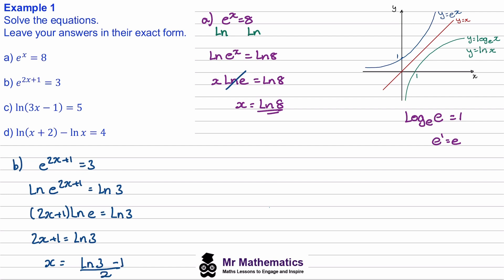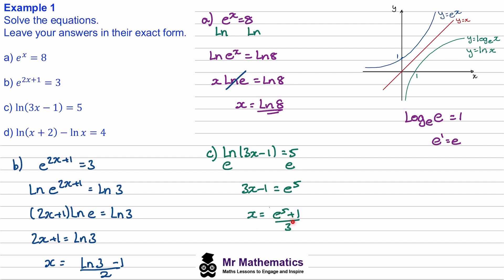Let's try question C. In this example, we need to cancel out this natural log. So now we'll raise e to the power of both sides. The e to the natural log will cancel, because we know it makes 1. This leaves us with 3x minus 1 equal to e to the 5. Then we add 1 to both sides and divide by 3, so we get x equals e to the 5 plus 1, over 3.